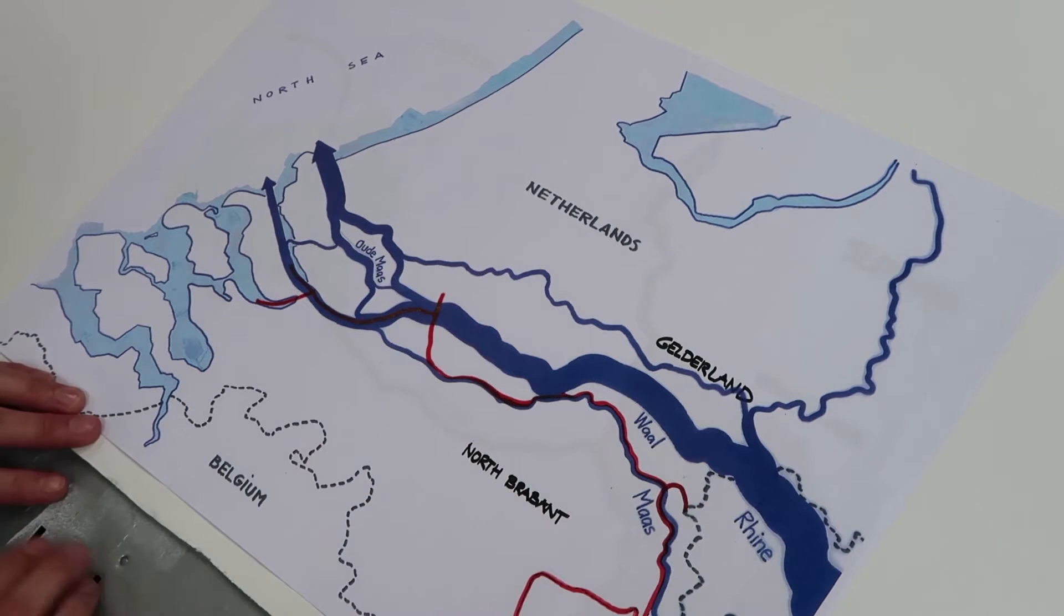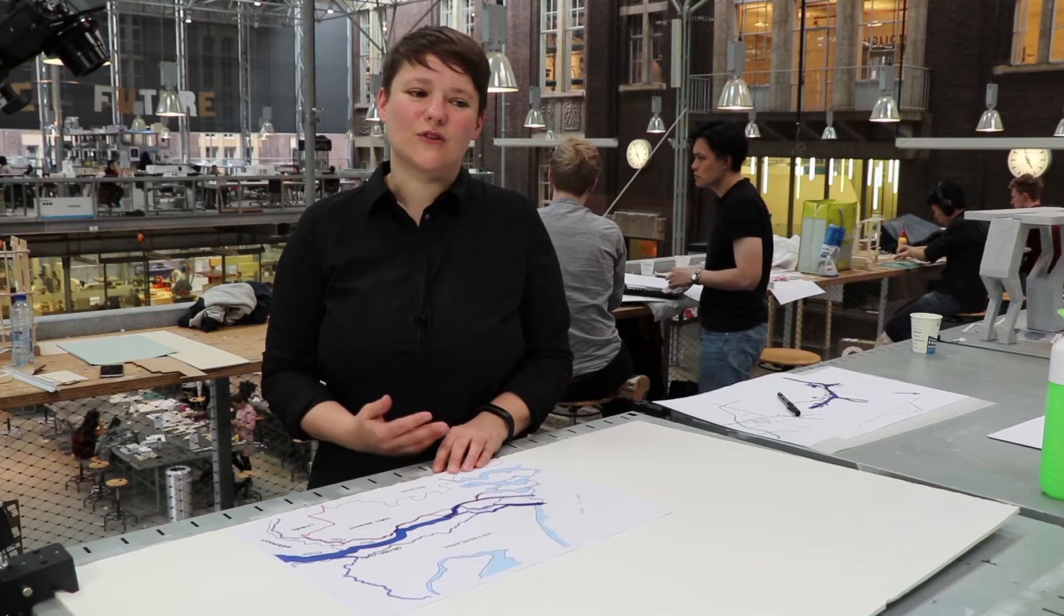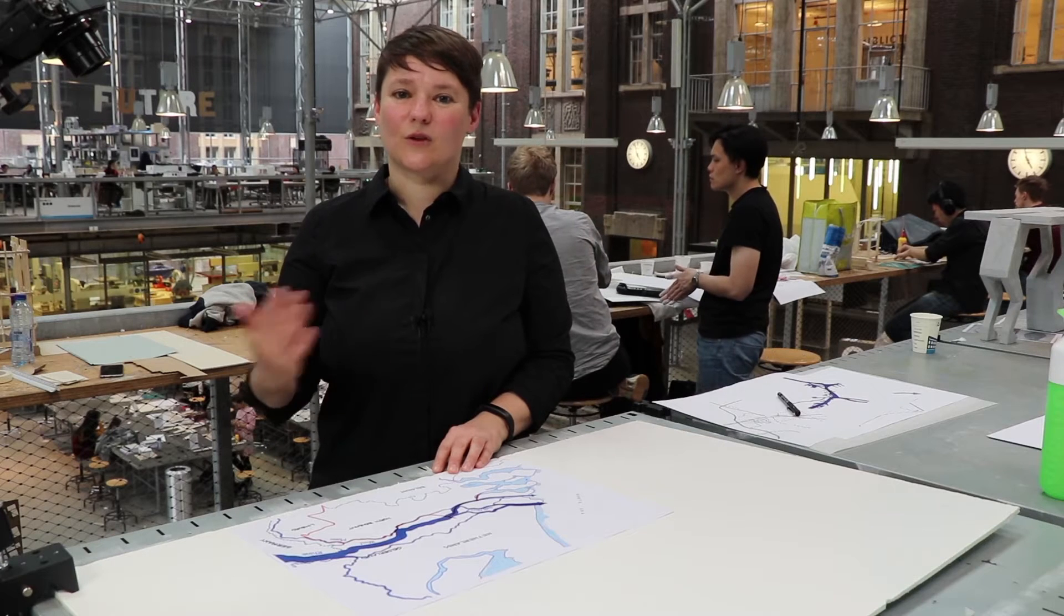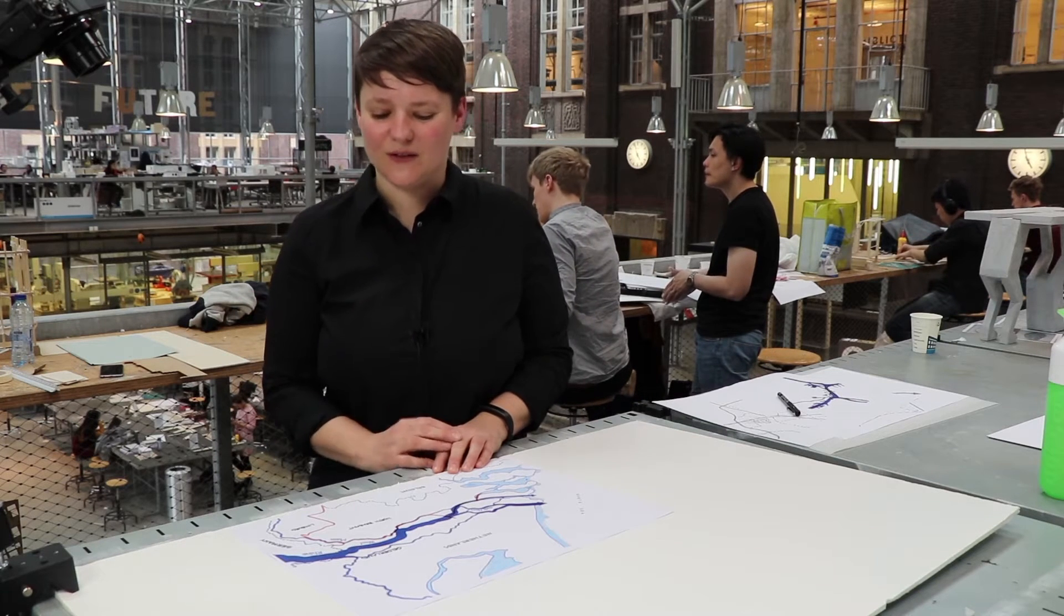We can see that the Rhine crosses a border between two nation states, between Germany and the Netherlands. But infrastructure does not only cross borders, it can build borders itself.